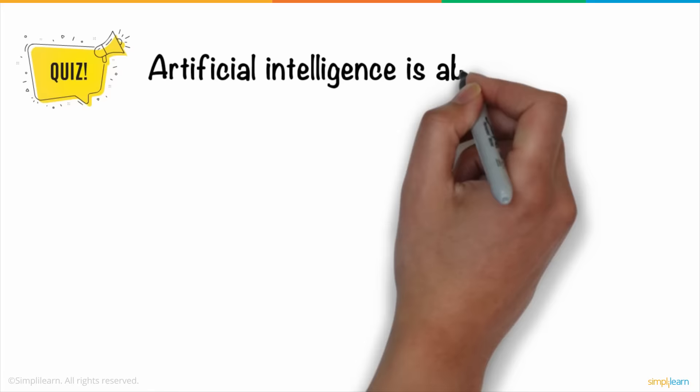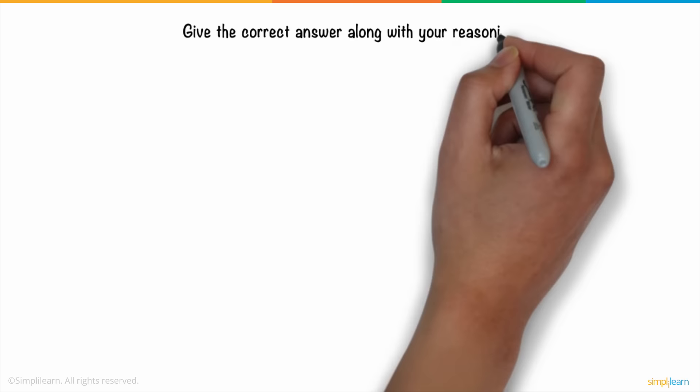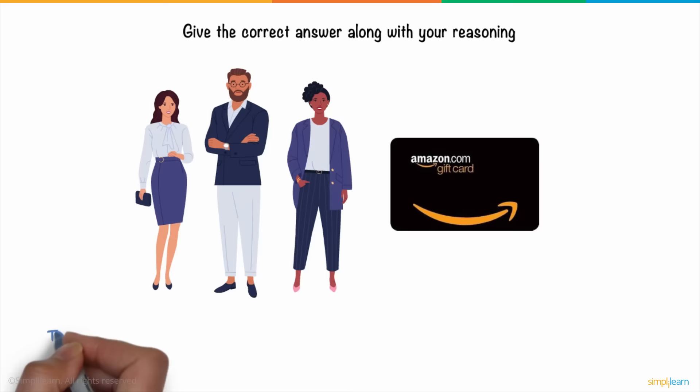Artificial intelligence is about playing a computer game, creating a device using your own intelligence, to program an intelligent machine, or investing your brain power in a machine. Give the correct answer along with your reasoning and stand a chance to win an Amazon voucher. Think about it and leave your answers in the comments section and we will provide the answer next week.